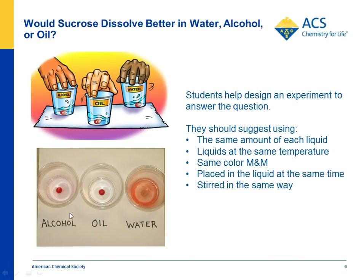Students see that in the alcohol, a little bit of coloring comes off but not much — maybe a tiny amount of sugar, it's hard to say. In the oil, neither the coloring nor the sugar came off. In water, a fair amount of sugar came off as well as the coloring. The question is really about the sugar, and water is clearly the best solvent when it comes to dissolving sugar.